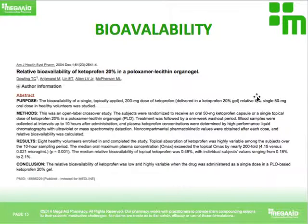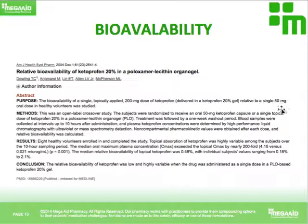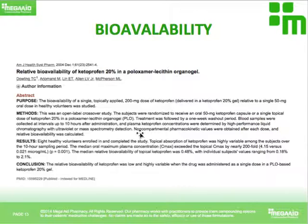Form one was a single oral dose of 50 milligrams, such as a tablet. Form two was 200 milligrams of ketoprofen administered topically. The oral dose was four times lesser than the topical dose. Despite this discrepancy, what they found is that the median oral maximum plasma concentration — the C-max — when given orally, exceeded the topical C-max by nearly 200-fold.